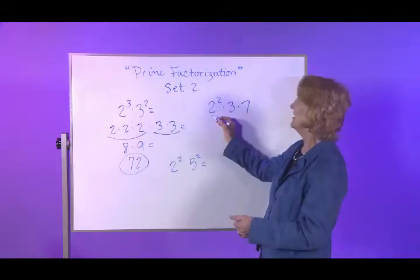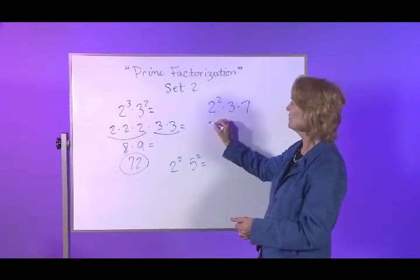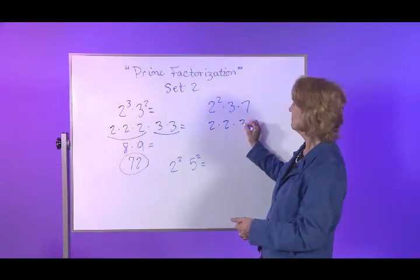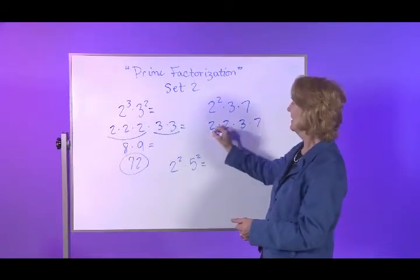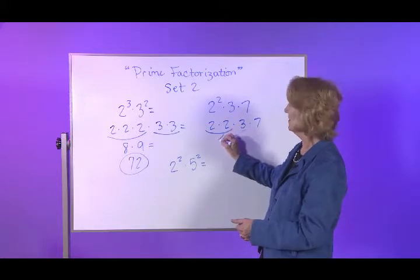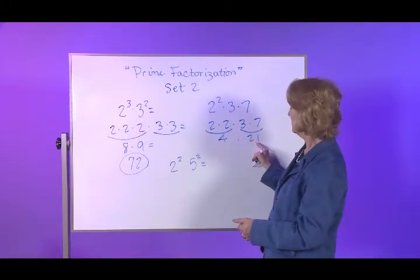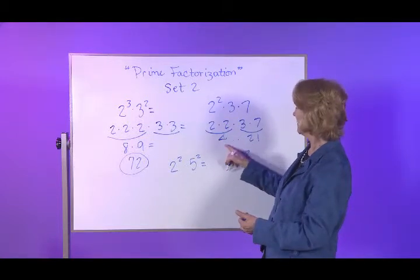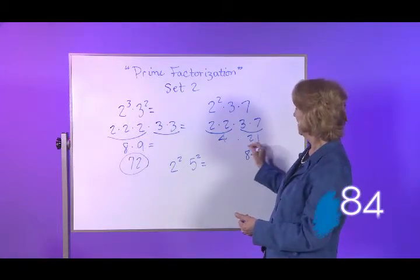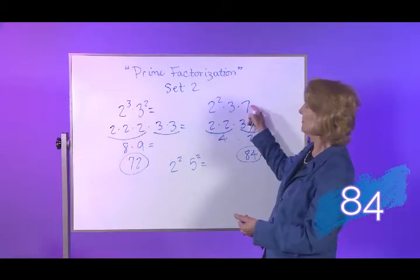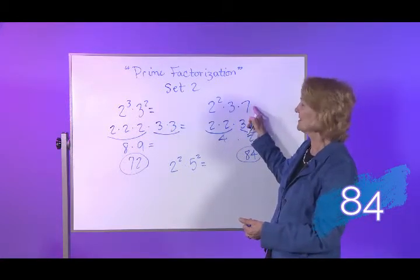Next one. 2 to the second times 3 times 7 becomes 2 times 2 times 3 times 7. 2 times 2 is 4. 3 times 7 is 21. 4 times 21. 4 times 20 is 80. 4 times 1 is 4. So this is the standard number, and that's the prime factorization for it.